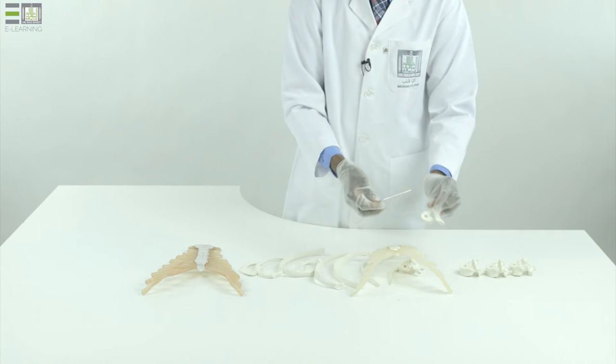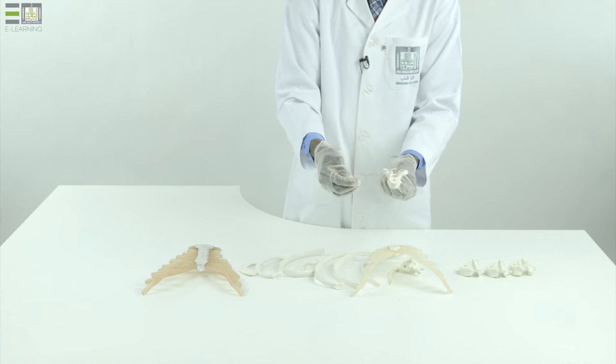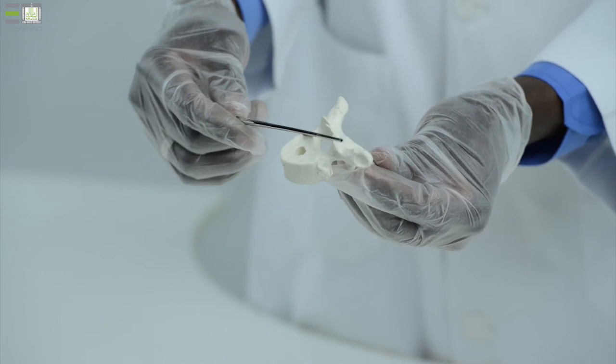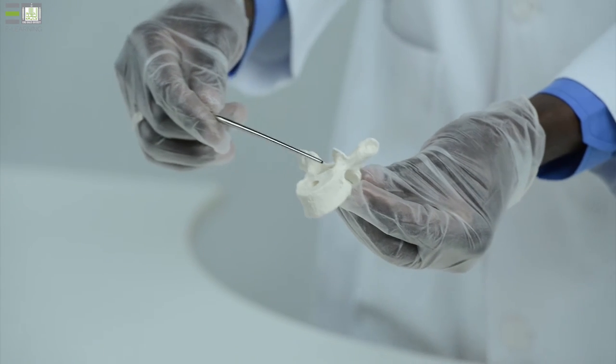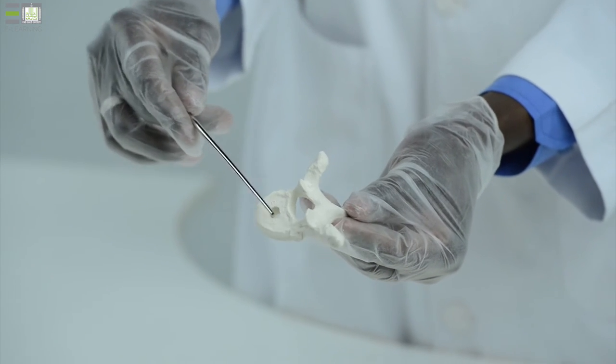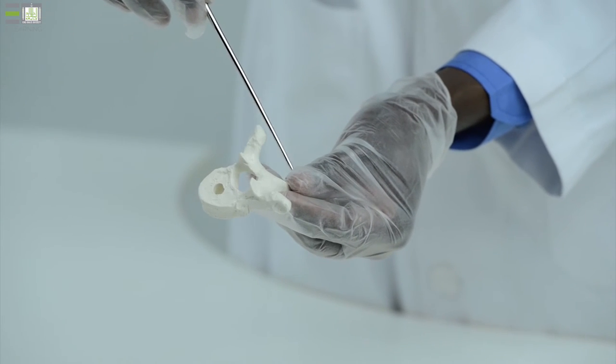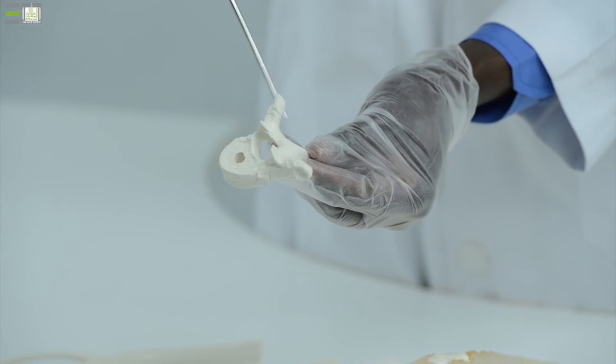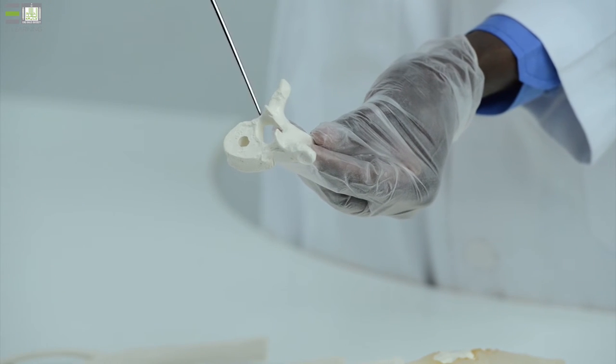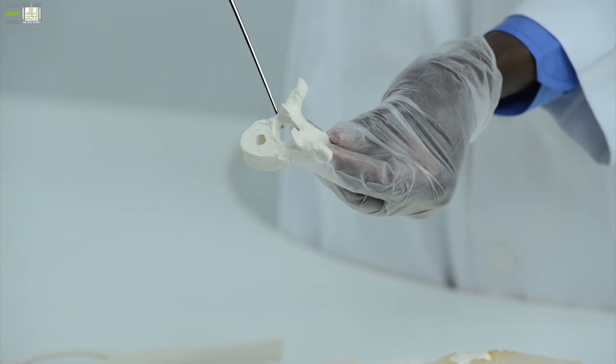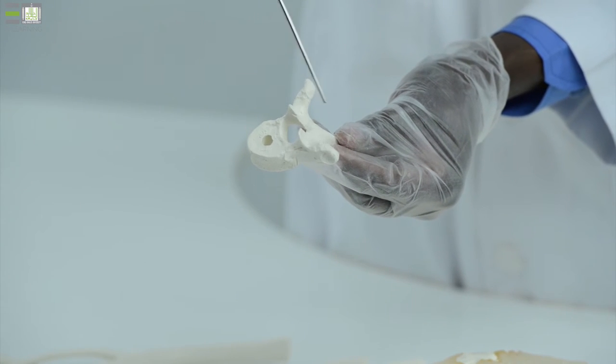The posterior part of our thoracic cage is bounded by 12 thoracic vertebrae. They are characterized by the following. Body anteriorly, and processes form an arch in the posterior part of the body. We call it neural arch, because it surrounds our spinal cord and its meninges and blood vessels.